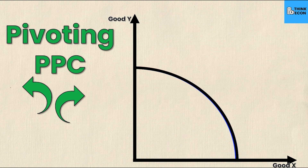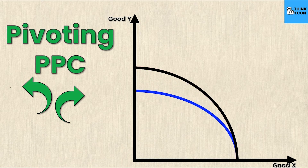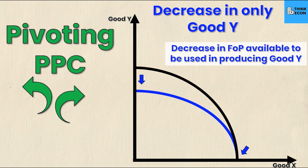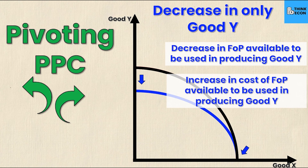Finally, we can have good Y move towards the origin: the y-intercept goes down but the x-intercept does not move. We call this a decrease in only good Y. This happens because of a decrease in the factors of production available for the production of good Y, or an increase in the cost of the factors of production for good Y only.